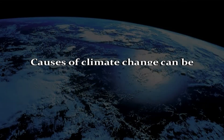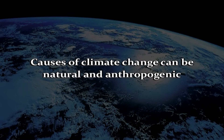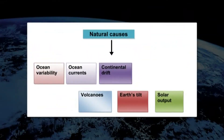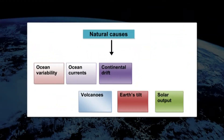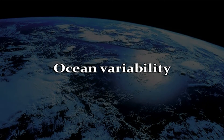The causes of climate change can be natural or anthropogenic. Natural causes include ocean variability, ocean currents, continental drift, earth's tilt, solar output and volcanoes. Now coming to the first cause: ocean variability.